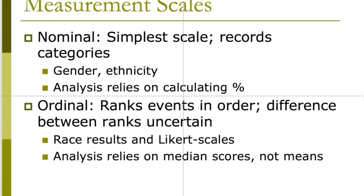Ordinal scales are different than nominal scales. Ordinal scales actually give you a rank order — they tell you that one is greater than or less than the other. So a true-false question on a test where one answer is correct would be an ordinal scale because one is worth more points than the other. Race results or Likert scale questions on a psychological test would all be ordinal scales. If you rank your top five favorite foods, that would also be an ordinal scale, as would race results in an Olympic race.